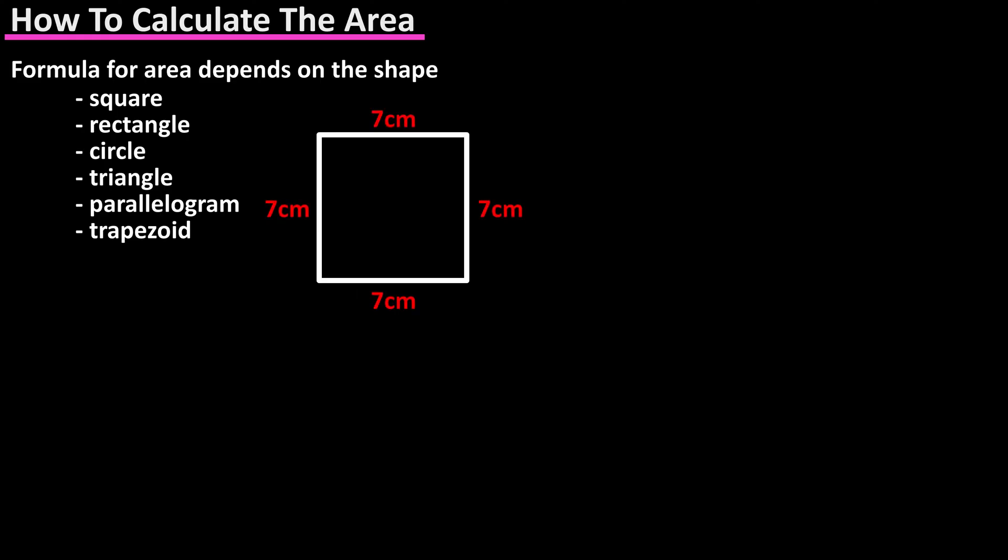Starting with a square in which all sides are of equal length. The formula is L squared or length times length. In this example the length is seven centimeters, so it would be seven centimeters squared or seven centimeters times seven centimeters, which equals 49 centimeters squared. It's squared because there's two centimeters in the multiplication.